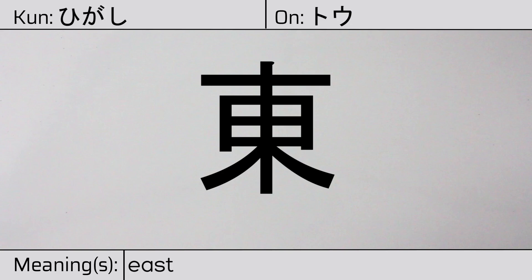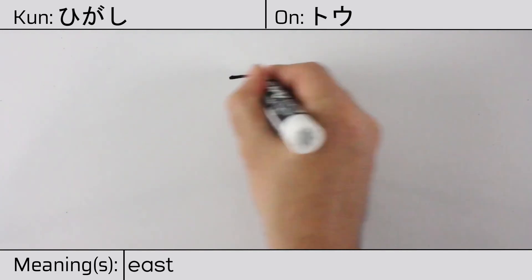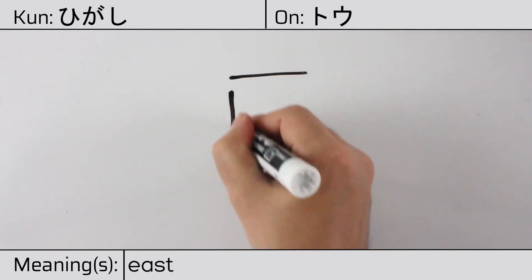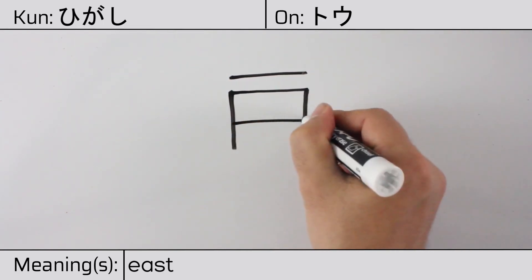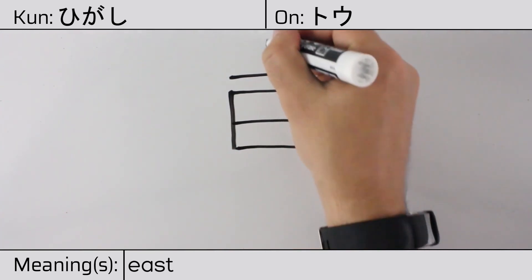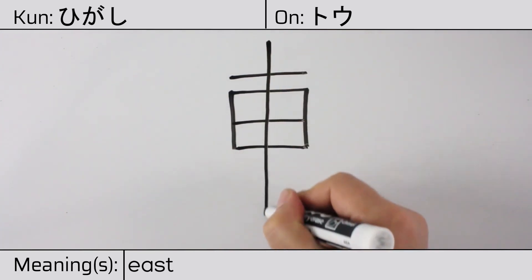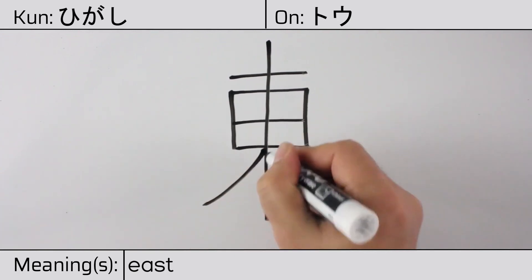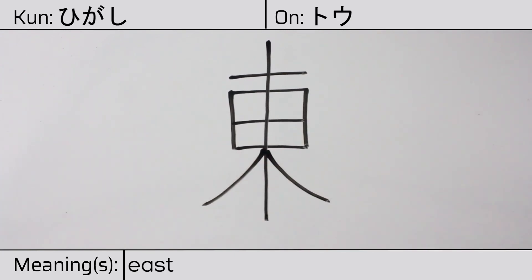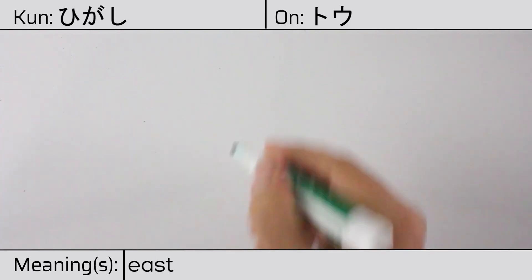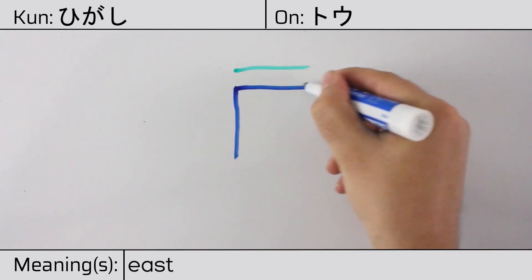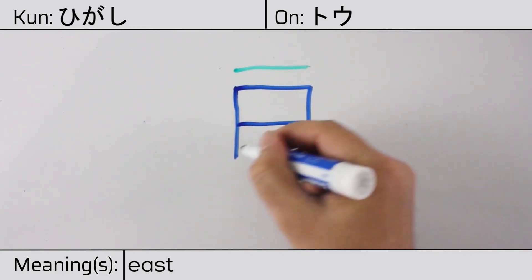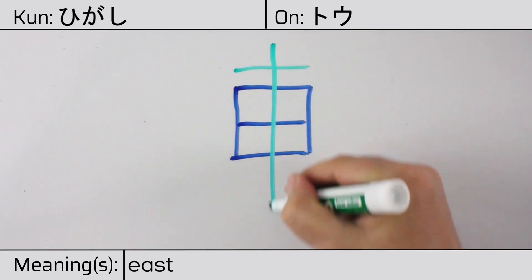Here is the stroke order. This character is made up of the following radicals or parts: kanji ichi, followed by nishi, or san, and finally tree, ki.